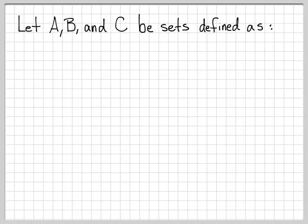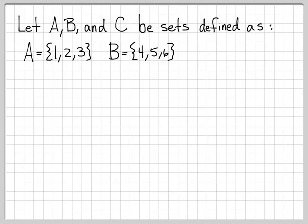In this problem, we're going to get a little practice working with relations, and we're going to work a very concrete example where we actually write down clearly what some of these sets and relations are. We're going to work with sets A, B, and C, where A is the set with elements 1, 2, 3; B is the set with elements 4, 5, 6; and C is the set with elements 7, 8, 9.